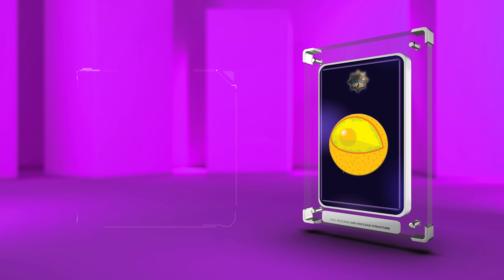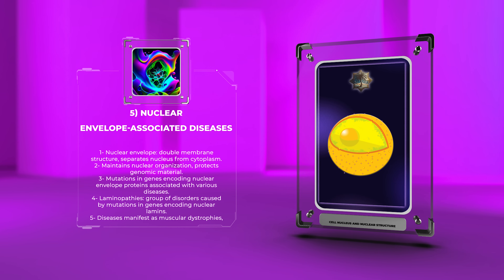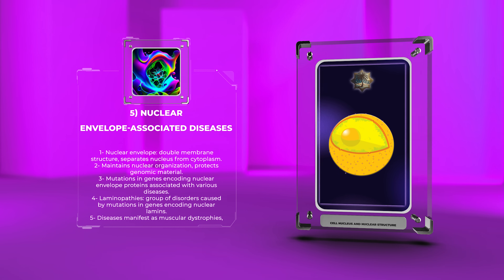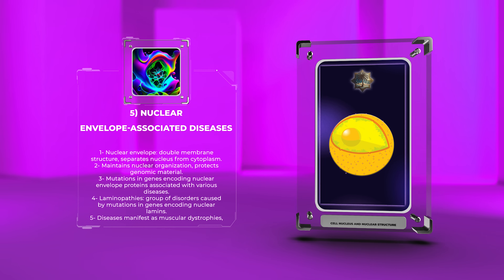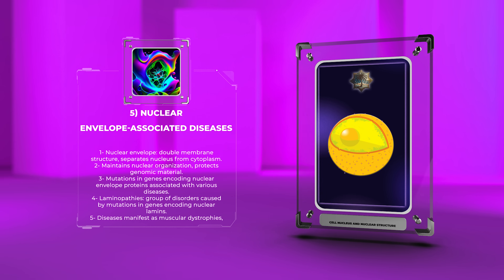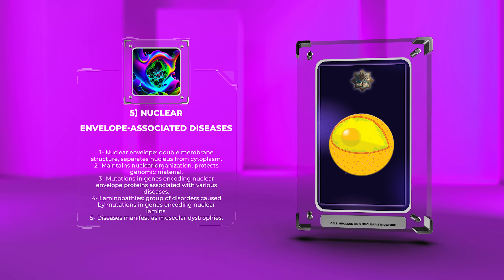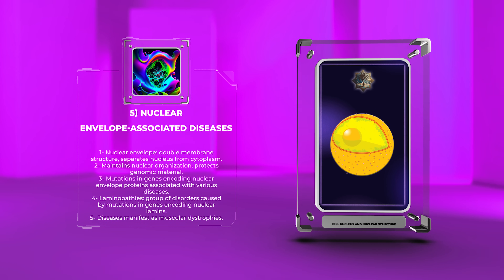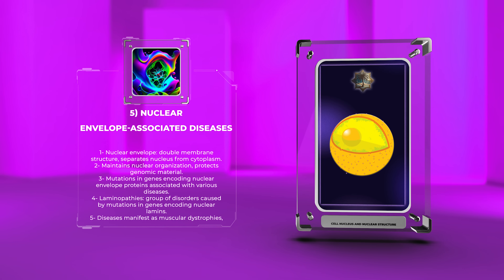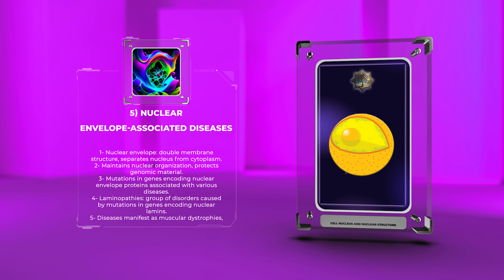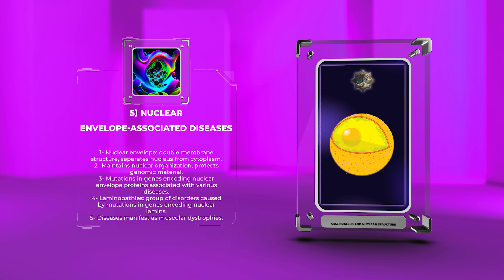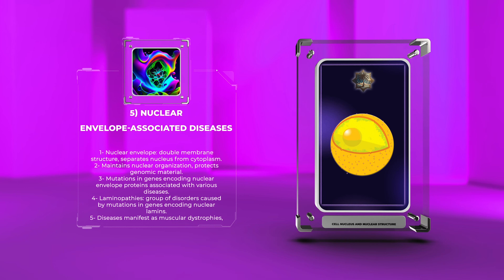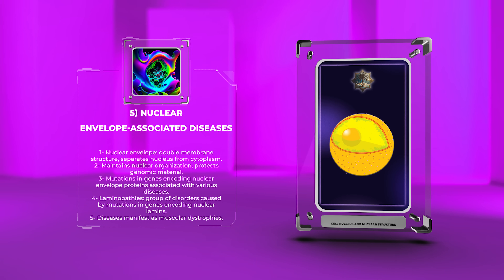The nuclear envelope is a double membrane structure that separates the nucleus from the cytoplasm. It plays a crucial role in maintaining nuclear organization and protecting the genomic material. Mutations in genes encoding nuclear envelope proteins have been associated with various diseases, collectively known as nuclear envelope-associated diseases. One well-known example is laminopathies, a group of disorders caused by mutations in genes encoding nuclear lamins, intermediate filament proteins that contribute to nuclear architecture. These diseases can manifest as muscular dystrophies, cardiomyopathies, neuropathies, or progeroid syndromes, highlighting the importance of nuclear envelope integrity in normal cellular function.